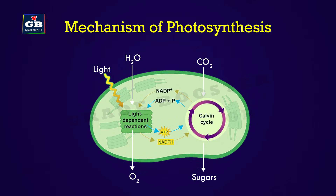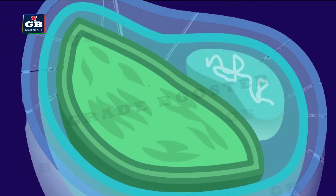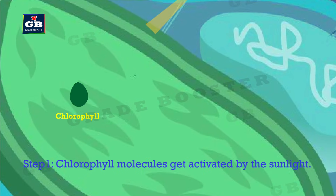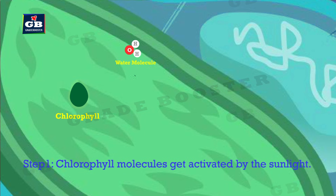Now let us look at the mechanism of photosynthesis. Photosynthesis is a very complex process, but here we are simplifying it to three steps. Step one: chlorophyll molecules present in the chloroplast absorb sunlight and get activated.